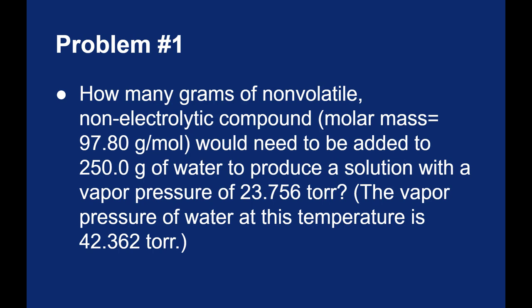Let's give it a try. We're going to start with a non-volatile, non-electrolytic compound. We're talking about an ideal situation. Non-electrolytic meaning we're talking about a molecular or covalent compound. We know the molar mass of the compound is 97.8 grams per mole. I'm going to drop the vapor pressure of water from 42.362 torr to 23.756 torr. And I want to know what mass of that solute do I need to put into 250 grams of water in order to produce that change.